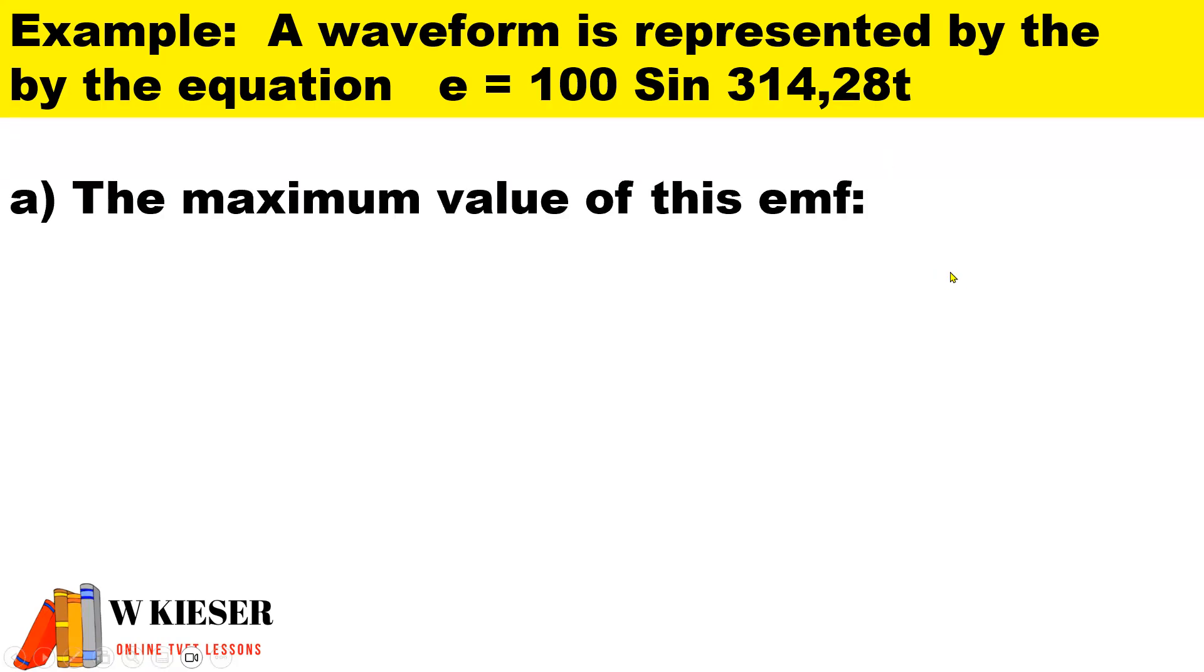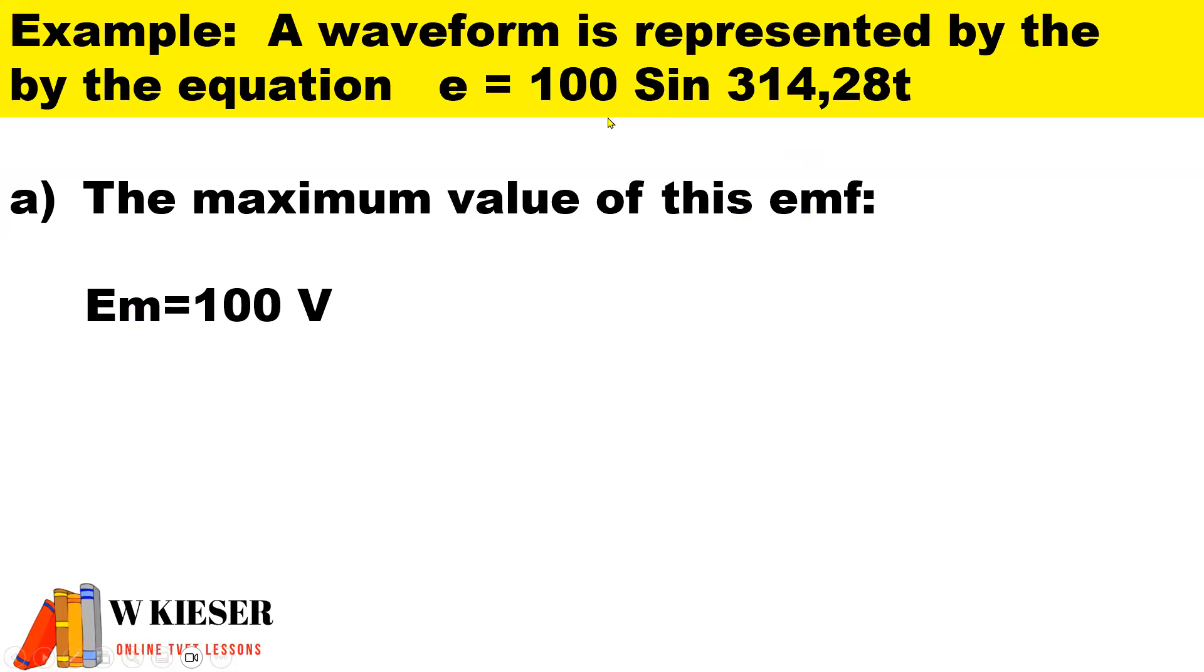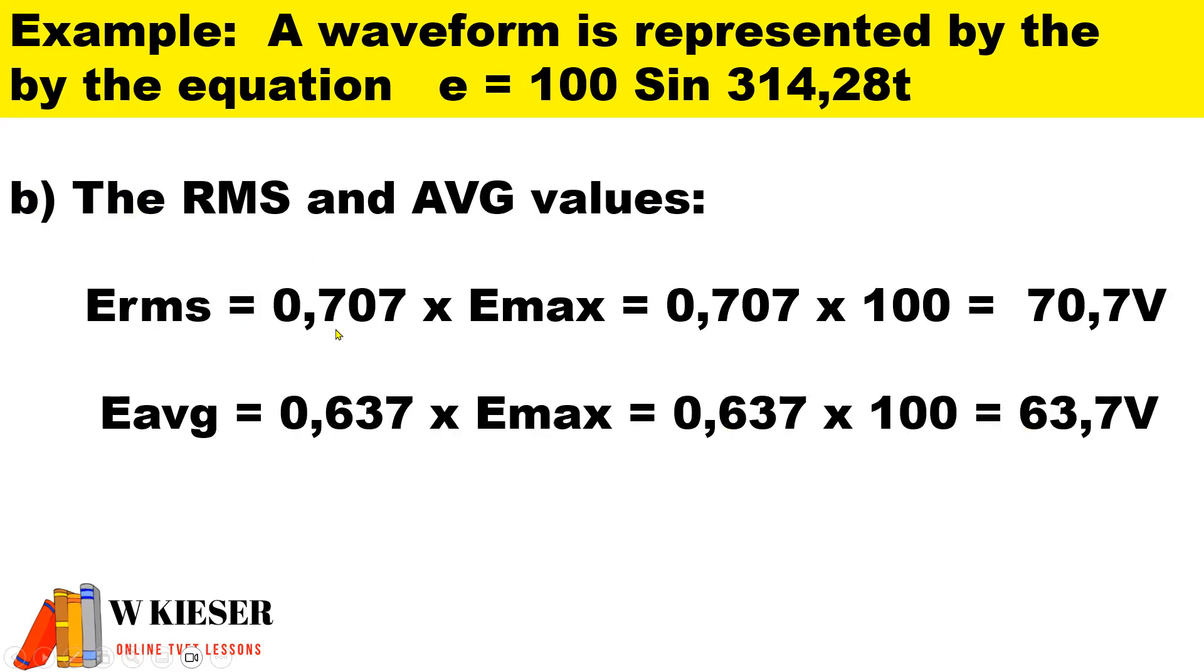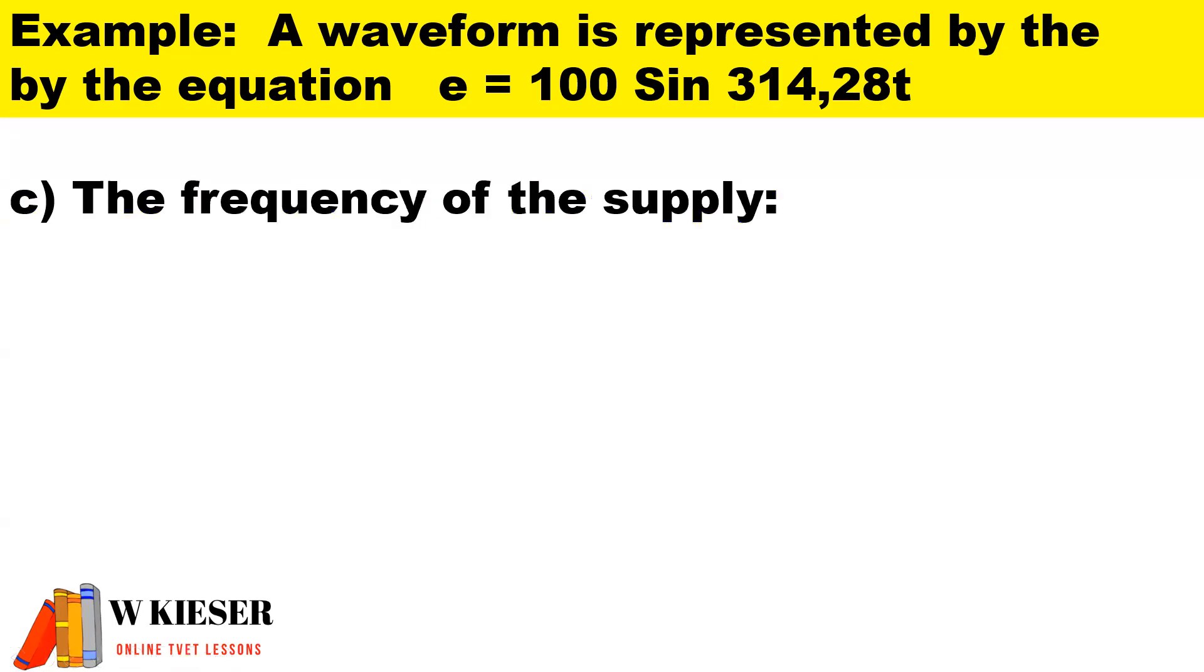To determine the maximum value of this EMF, we look at the equation and it's 100 volts. To determine the RMS and average values, the RMS is 0.707 multiplied by the maximum value, and the average value is 0.637 multiplied by the maximum value. To calculate the frequency, we use the radians of 314.28 and we divide by 2 pi. This means we have a frequency of 50 hertz.